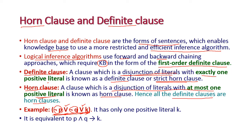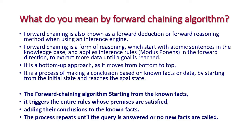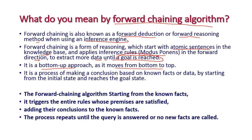The next question is: what is the forward chaining algorithm? Forward chaining is known as forward deduction or forward reasoning when using an inference engine. Forward chaining is a form of reasoning which starts with atomic sentences in the knowledge base and applies inference rules — that is, modus ponens — in the forward direction to extract more data until a goal is reached. It is a bottom-up approach, meaning it moves from bottom to top. It is a process of making conclusions based on facts or data by starting from the initial state and reaching the goal state.